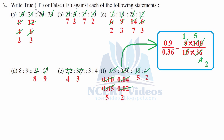Question 2: Write true or false against each of the following statements. Part a: 16 is to 24 in proportion to 20 is to 30. We check the first two ratios and compare with the second two. For 16 to 24: reducing gives 8 to 16 and 12 to 24, then 4 to 8 and 6 to 12, and finally 2 to 4 and 3 to 6, so 2 is to 3. The zeros cancel and the ratios are equal — therefore they are in proportion: True.